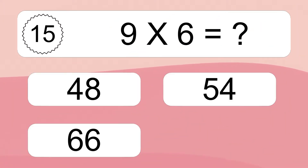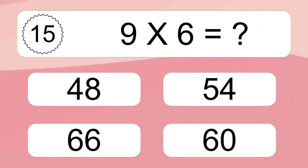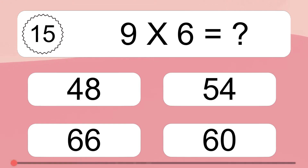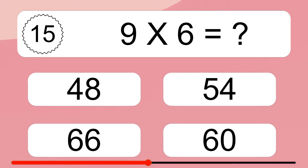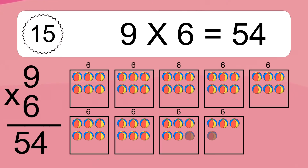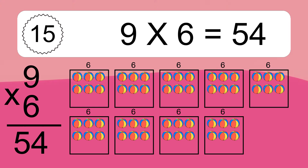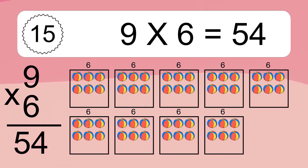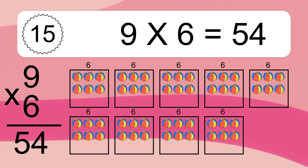9 times 6 equals what? 9 times 6 equals 54. We have 9 boxes, and each box has 6 colorful balls inside. If you count all the balls in all the boxes together, you will have 9 times 6 balls. This equals 54 balls.